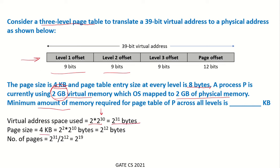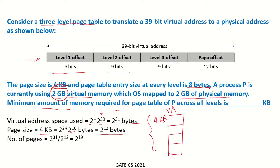Page size is 4KB; converting to bytes by multiplying by 2^10 gives us 2^12 bytes. Now, how many pages are there if the virtual space is 2^31 bytes and the page size is 2^12 bytes? Dividing 2^31 by 2^12 gives us 2^19 pages in total.